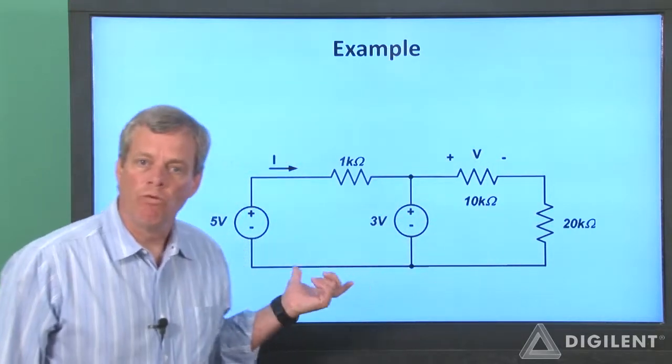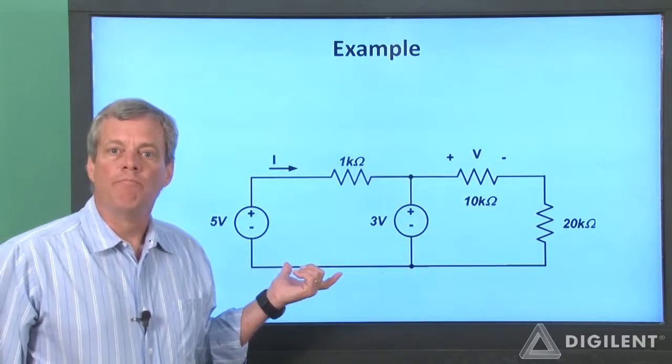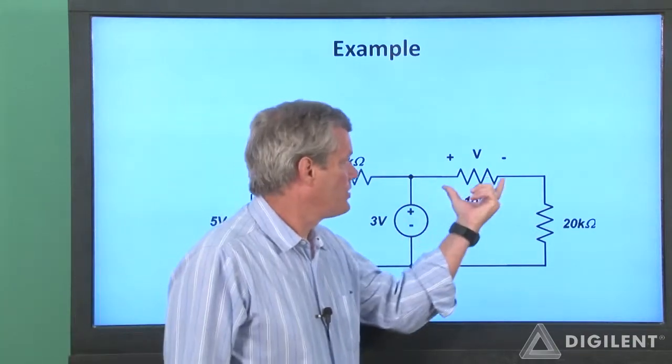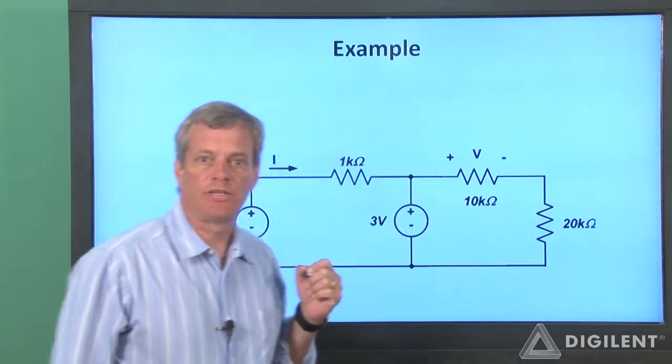Here's a schematic of the circuit we want to implement. We're going to want to measure the current out of the source, I, and the voltage across this 10 kilo ohm resistor.